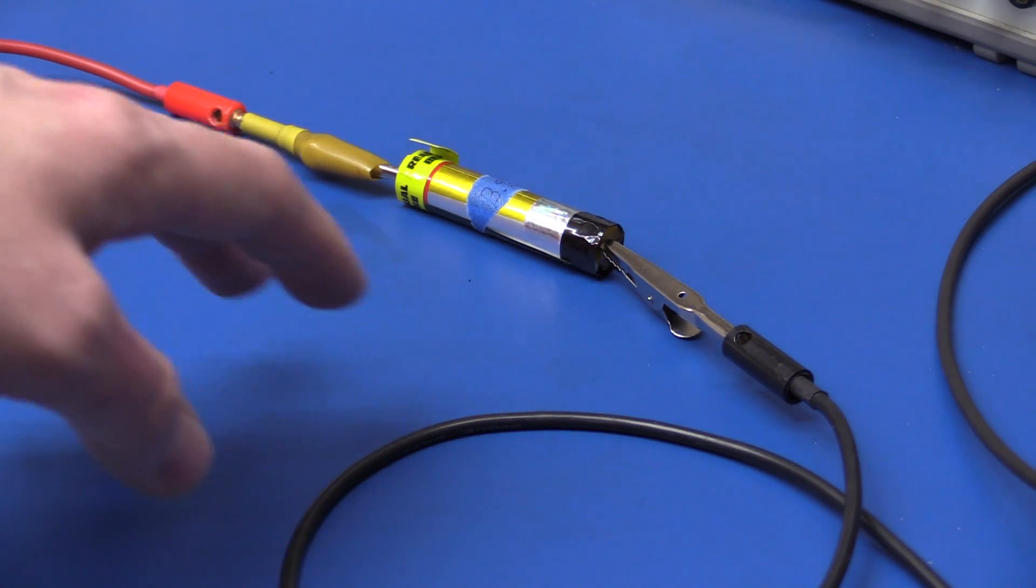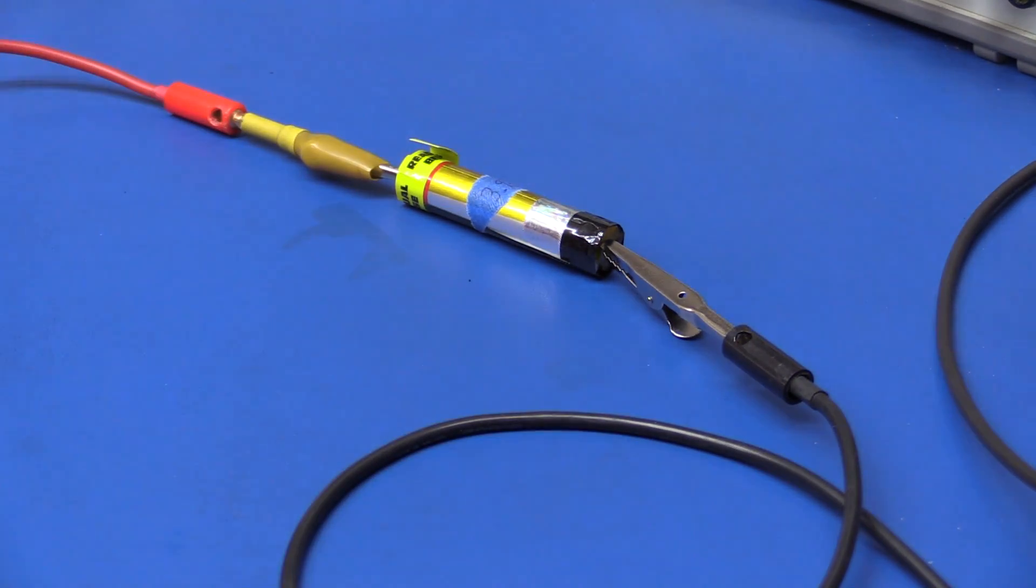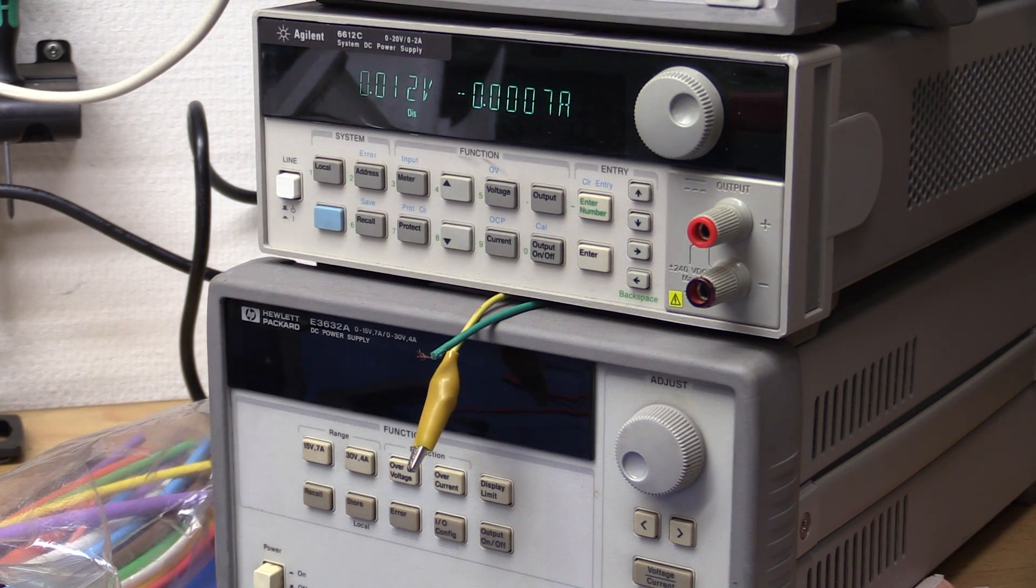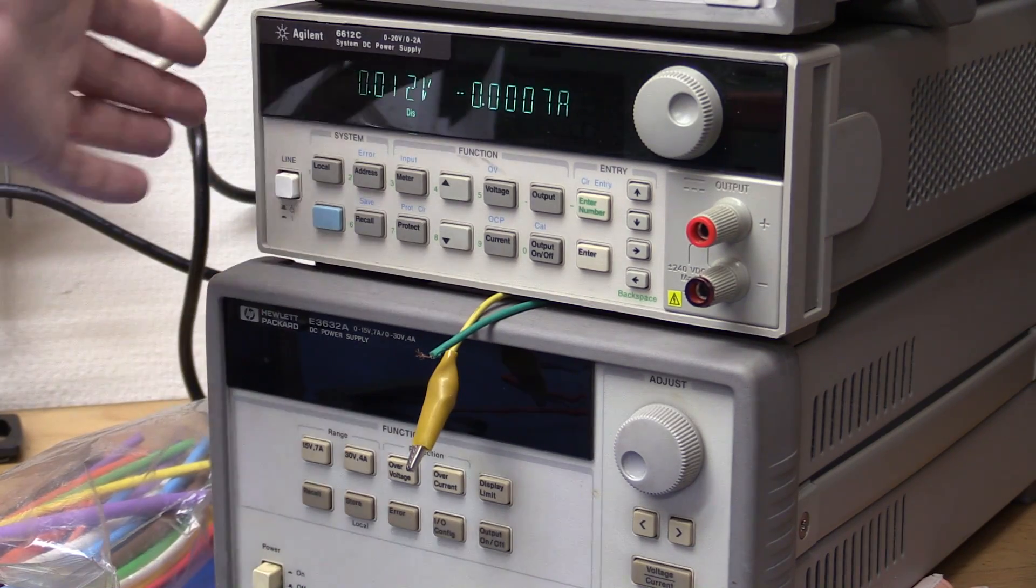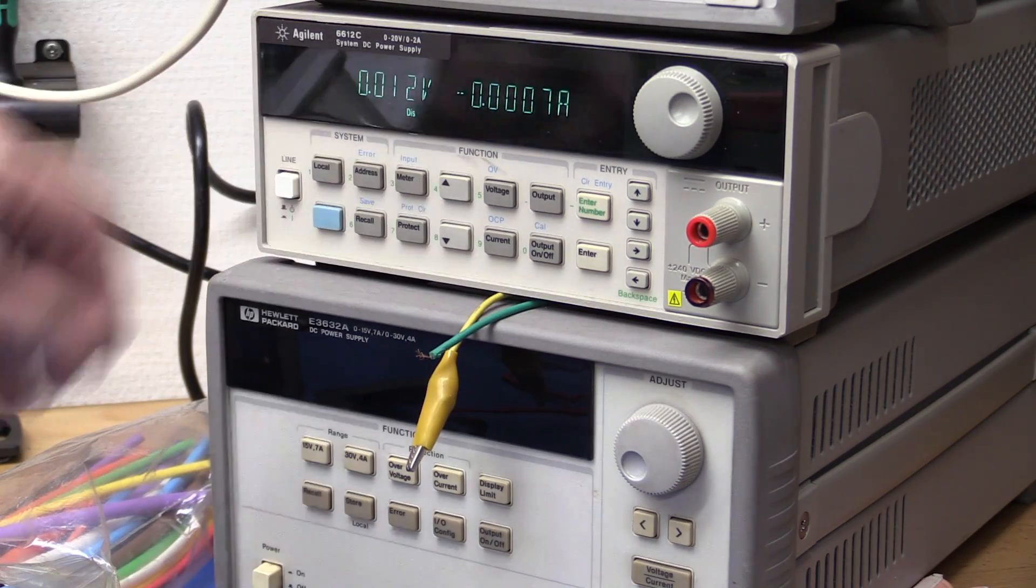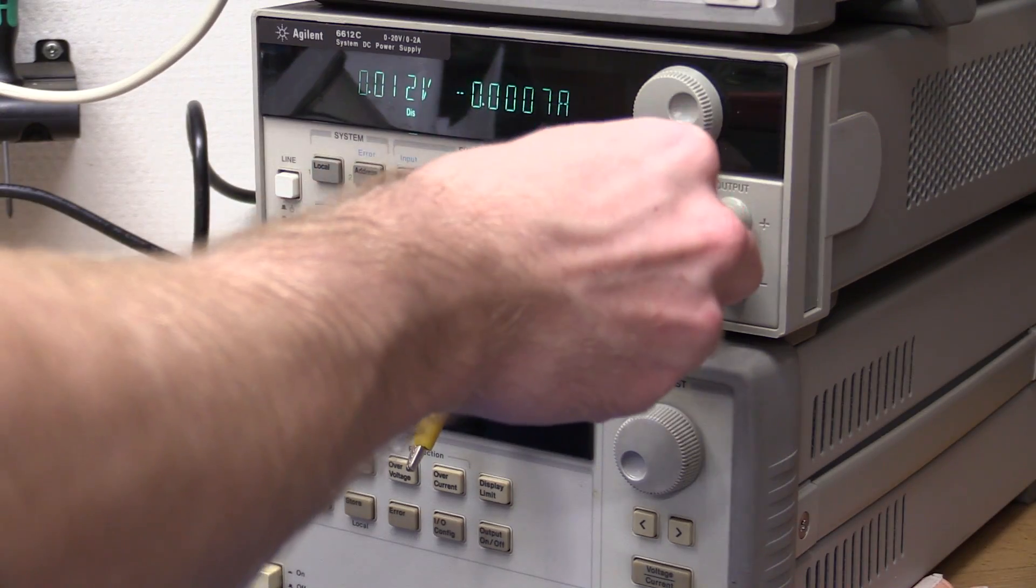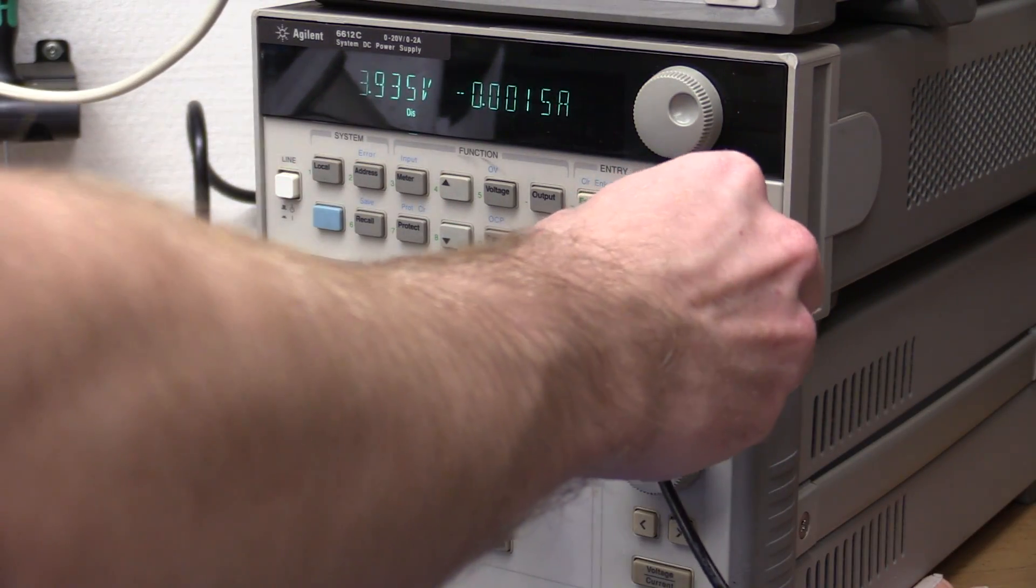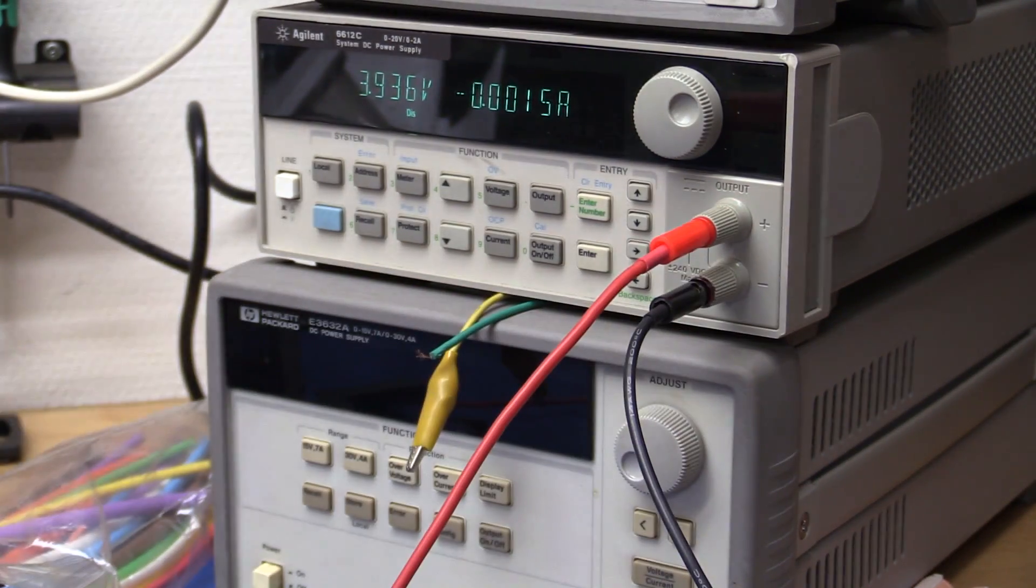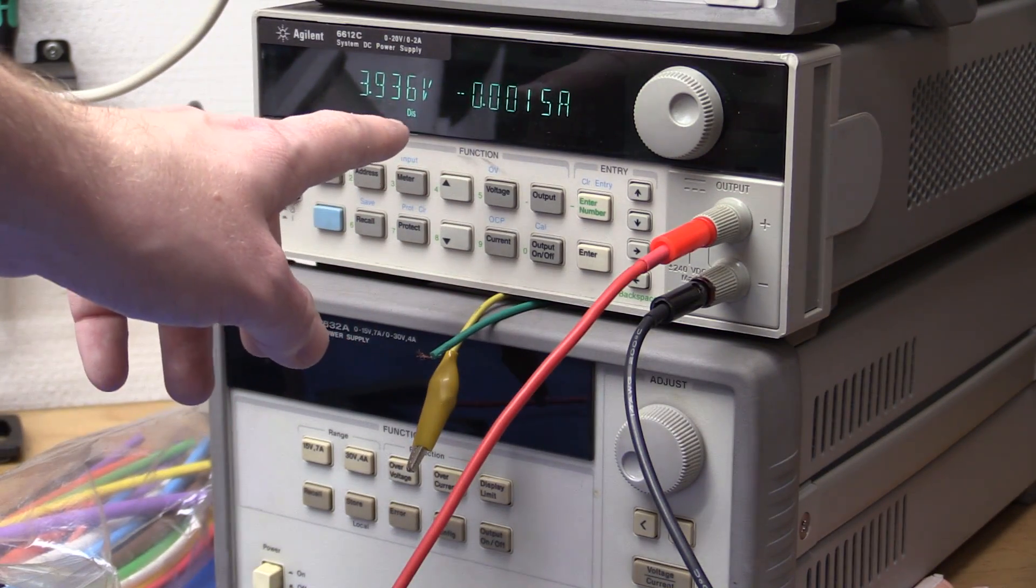So I'll just charge it with a bench supply. I think that's the most convenient for a single cell. And one thing to be careful of, at least with the HP supplies, is that this one up here has a voltmeter. So I can actually stick this in to the power supply while it's turned off and I can just read the voltage back.